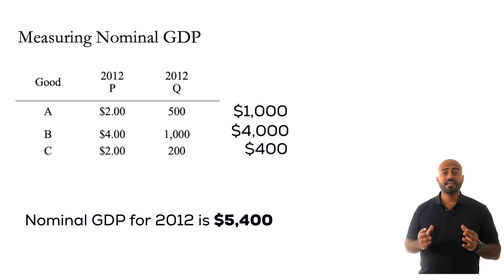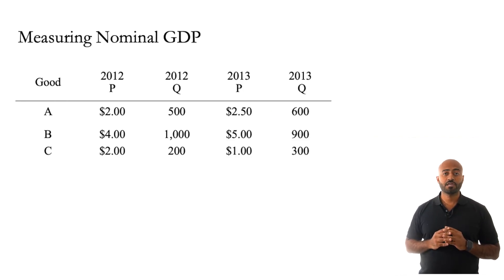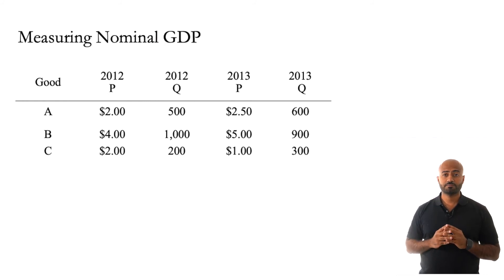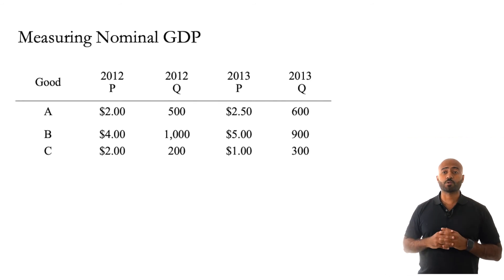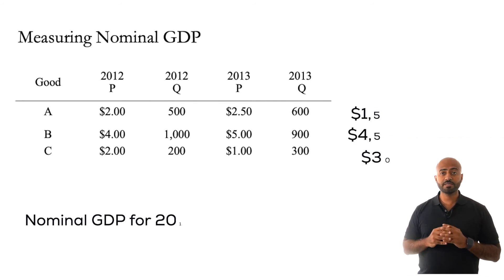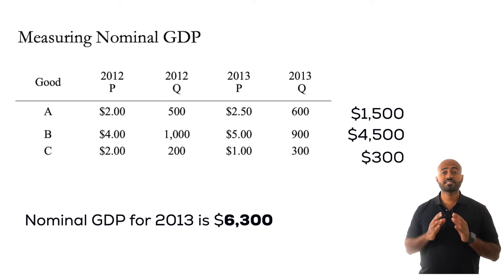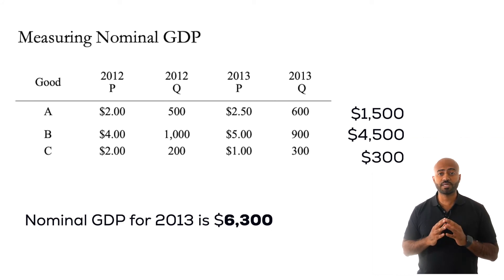Next, calculate nominal GDP for 2013. Total nominal GDP for 2013 is $6,300.